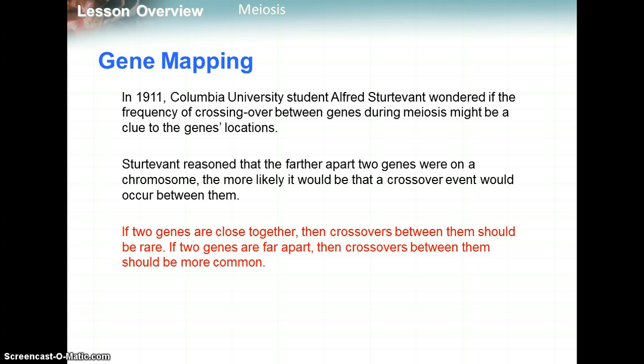This led to something called gene mapping. In the early 1900s, student Sturtevant wondered if the frequency of crossing over in prophase I of meiosis between genes might be a clue to their locations. He reasoned that the farther apart two genes were on a chromosome, the more likely a crossover event would occur between them — so if two genes are close together, crossovers should be rare, and if they're far apart, crossovers should be more common.